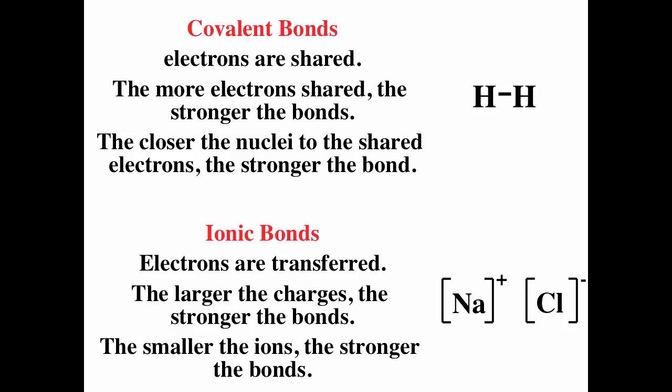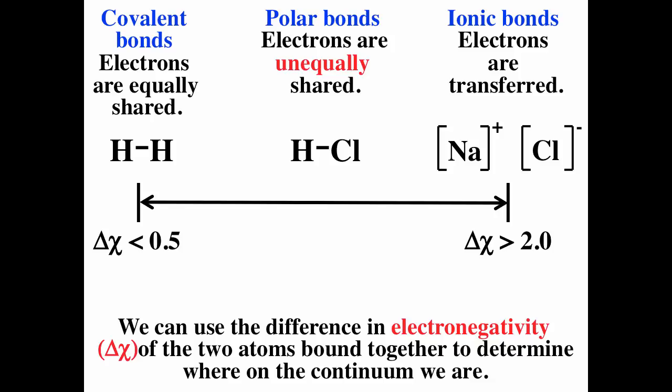Elements often try to get noble gas configuration by either sharing electrons in covalent bonds or by transferring electrons to form ionic compounds. Based on the difference of electronegativity, we can see whether bonds will be equally shared or if electrons will transfer forming ionic compounds. If the difference of electronegativity is greater than 2, it's likely ionic. If less than 0.5, bonding electrons are equally shared. If between 0.5 and 2, there's unequal sharing and you can have a polar bond.